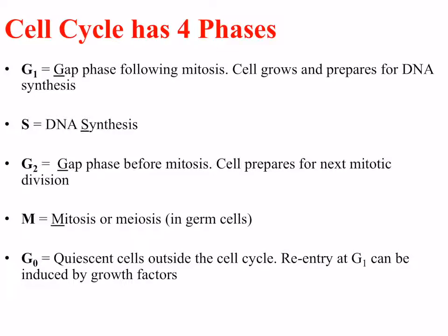The four main phases are: G1, which is a gap phase following mitosis where the cell will grow and prepare for DNA synthesis; S, which stands for synthesis, where DNA replication occurs; G2, a second gap phase that occurs before mitosis where the cell prepares for the next mitotic division; and the M phase — mitosis, or in the case of germ cells, meiosis — where the cell separates into two identical daughter cells.